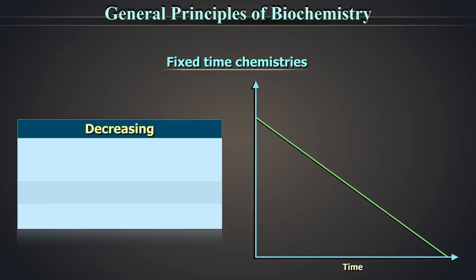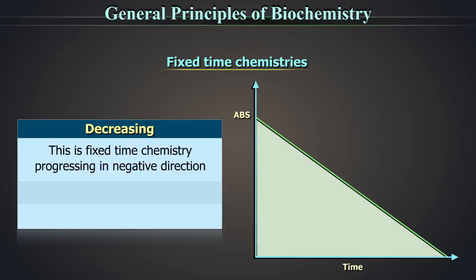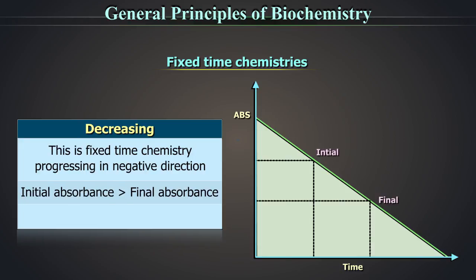Decreasing type. This is fixed time chemistry progressing in a negative direction. Here, the initial absorbance is greater than final absorbance. Therefore, the difference between the final and the initial absorbance, called as delta absorbance, is always negative.